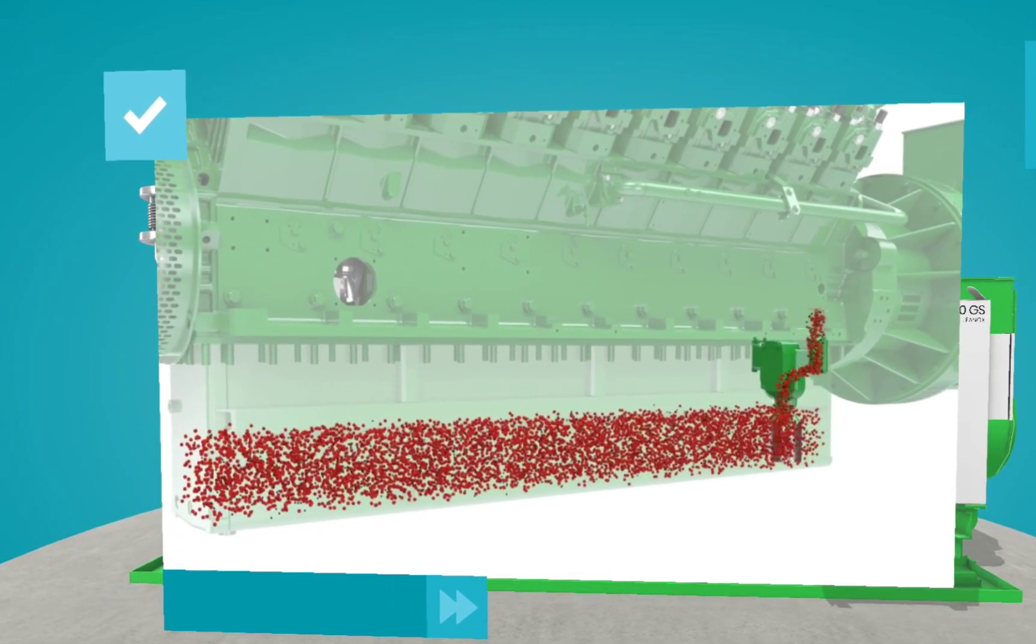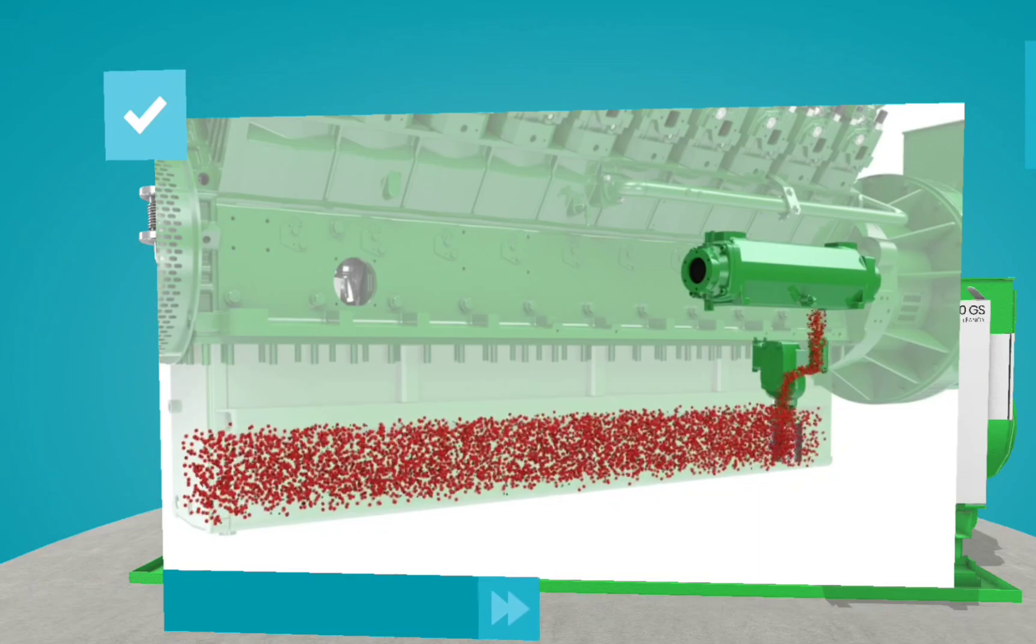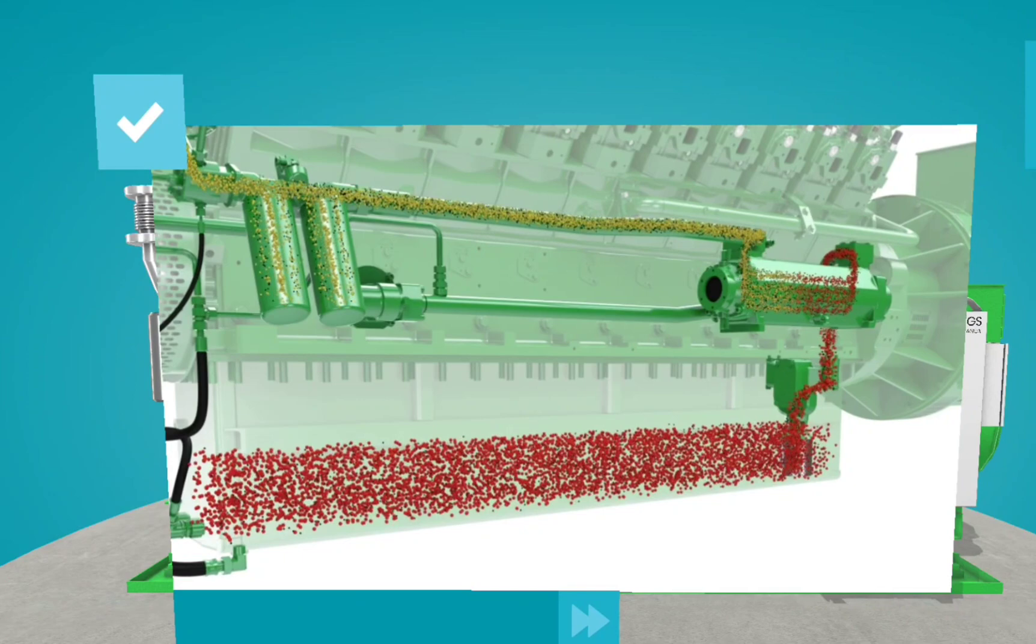Before it enters the engine, it is firstly cooled in a heat exchanger, and secondly it passes through an oil filter, to make sure that any unwanted particles are removed.